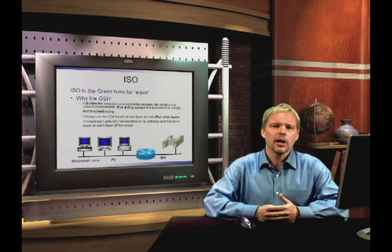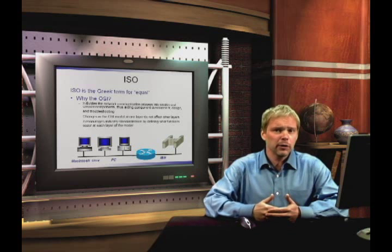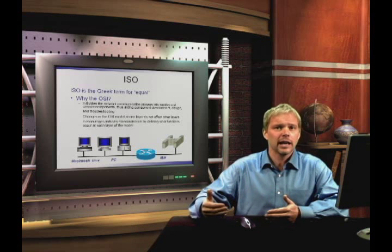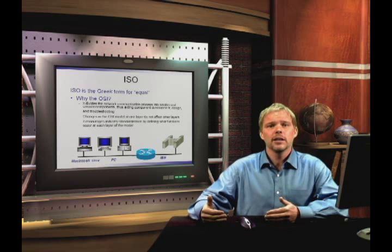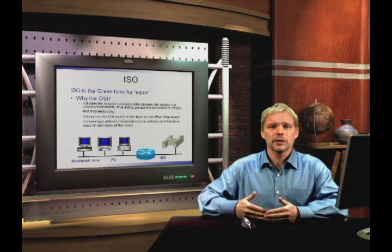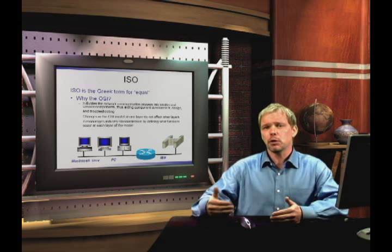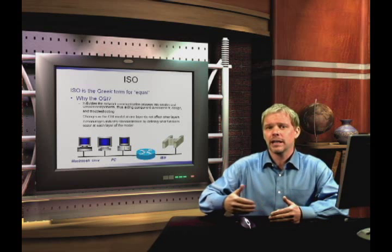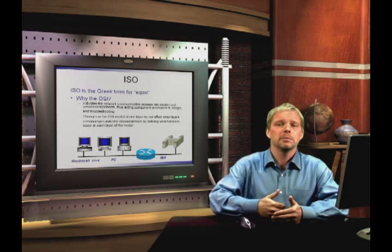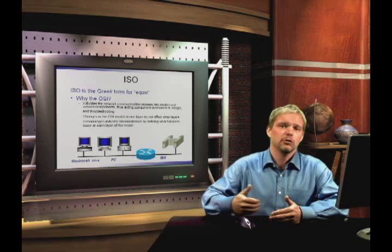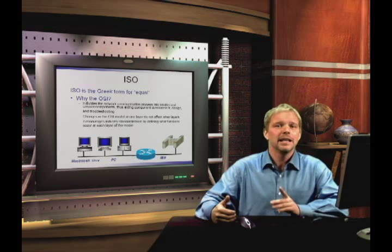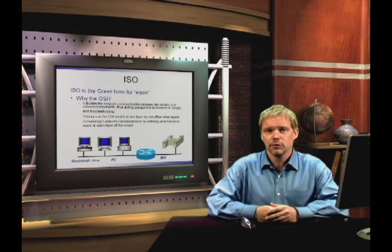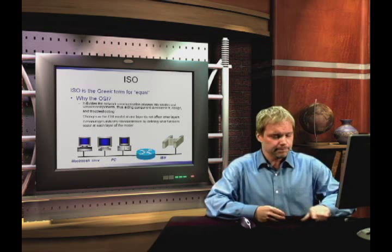Let's talk about how disparate communication can occur between different types of computers. For example, a long time ago, how did a PC communicate to a Mac, or how did a PC communicate to a mainframe? This is what the OSI provided for us.